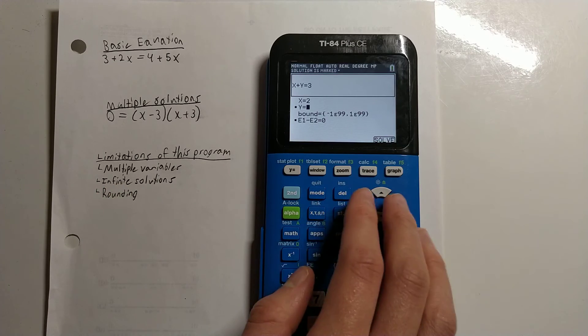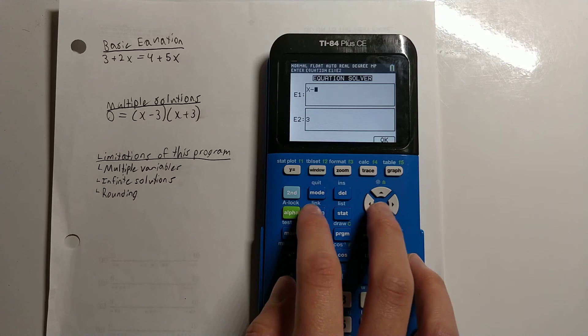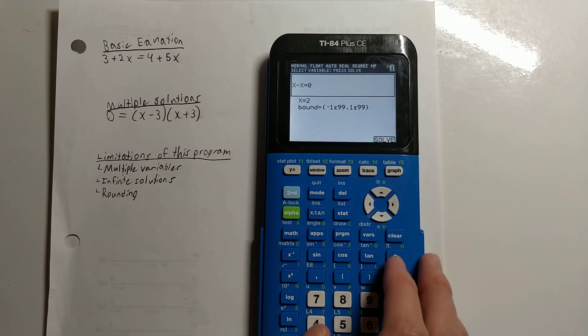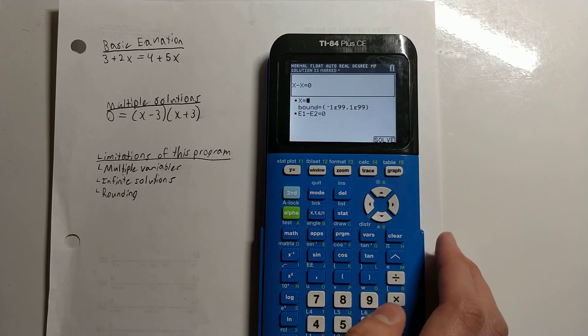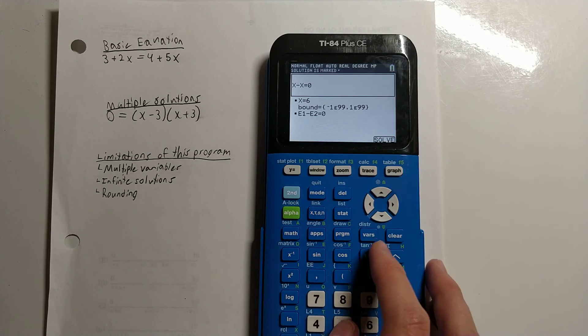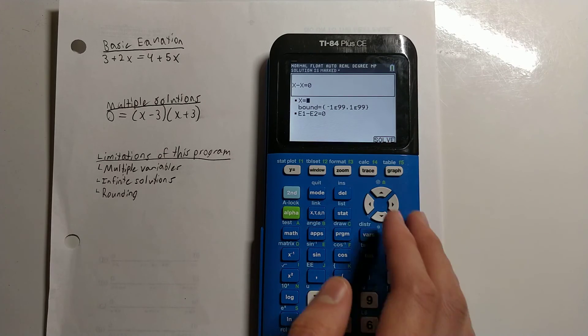And then if you type in an equation with infinite solutions, so if we do like x-x=0, it will basically say that any number we type in is the correct answer. It's not going to tell you that there's infinite solutions. It's just going to say that whatever you typed in is the correct answer. So be careful of that.